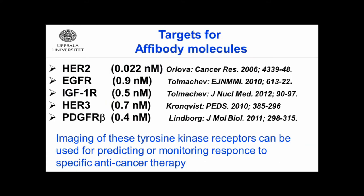We focus in our research mainly on tyrosine kinase receptors. This is important because they are often overexpressed in cancer, and their signaling confers malignant properties to cancer cells. They are targets for many therapeutics, making this a theranostics approach: you can first select the patient for a particular treatment and further monitor expression in response to treatment. We have at least five binders to this receptor with sub-nanomolar or even low picomolar affinity.